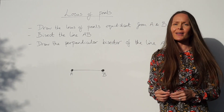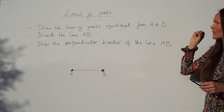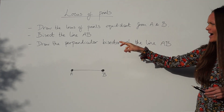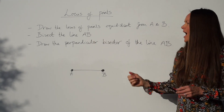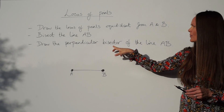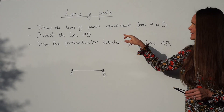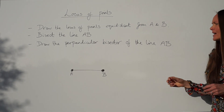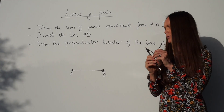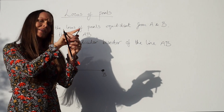For example two, it says: draw the locus of points equidistant from A and B. This means exactly the same thing as bisect the line AB, and also draw the perpendicular bisector of the line AB — they all mean the same thing. Take your compass and pencil and open it so the distance between the tip and your pencil is just over halfway along the length of your line.